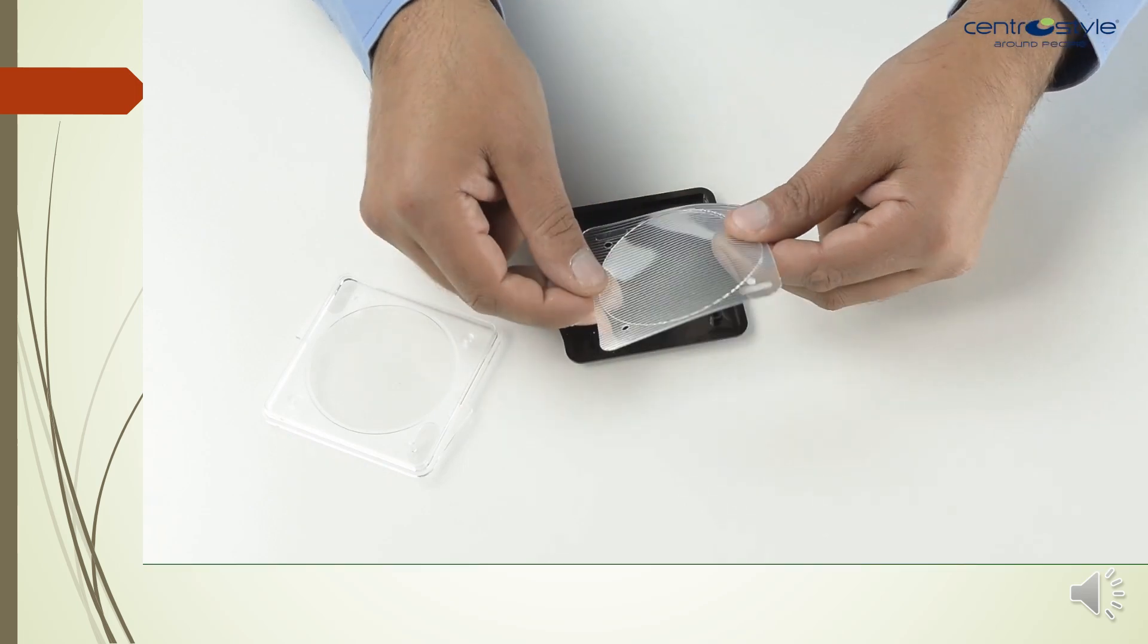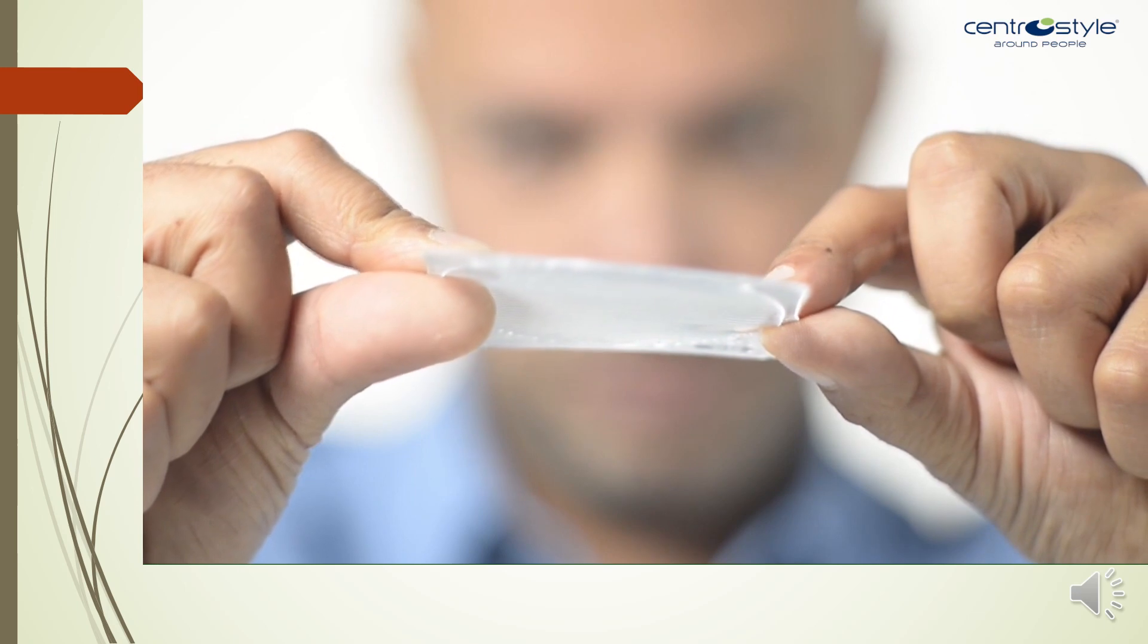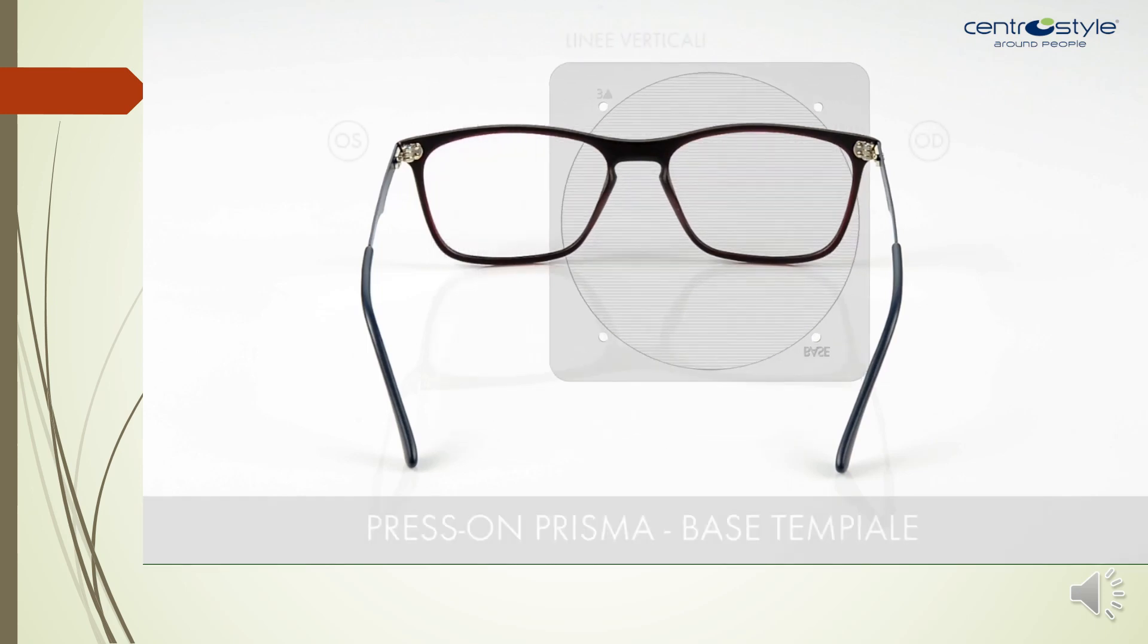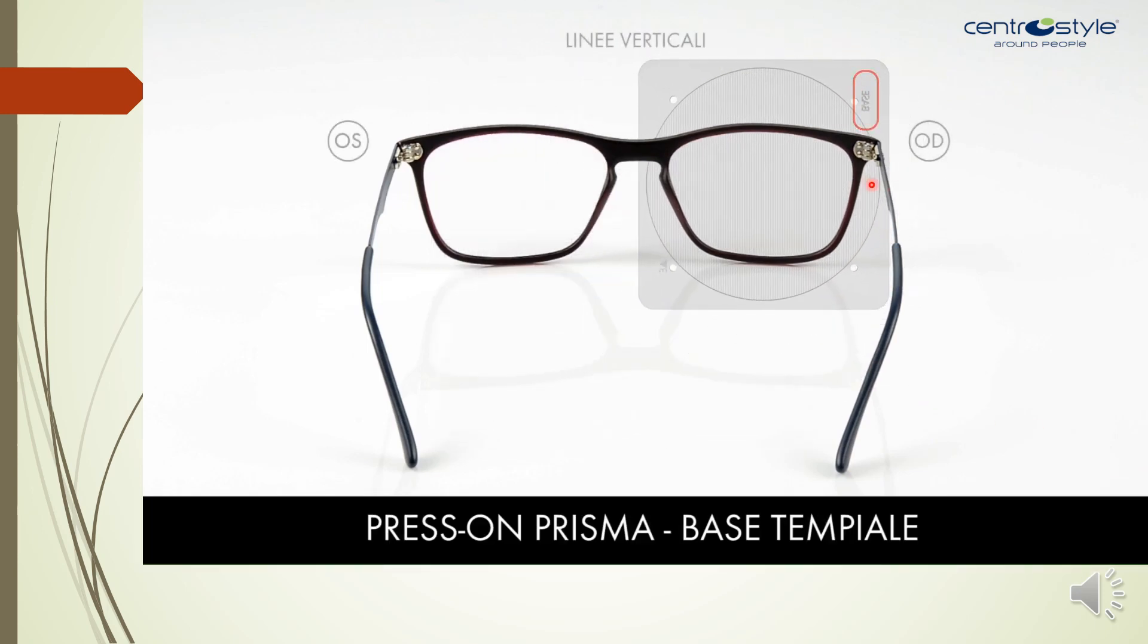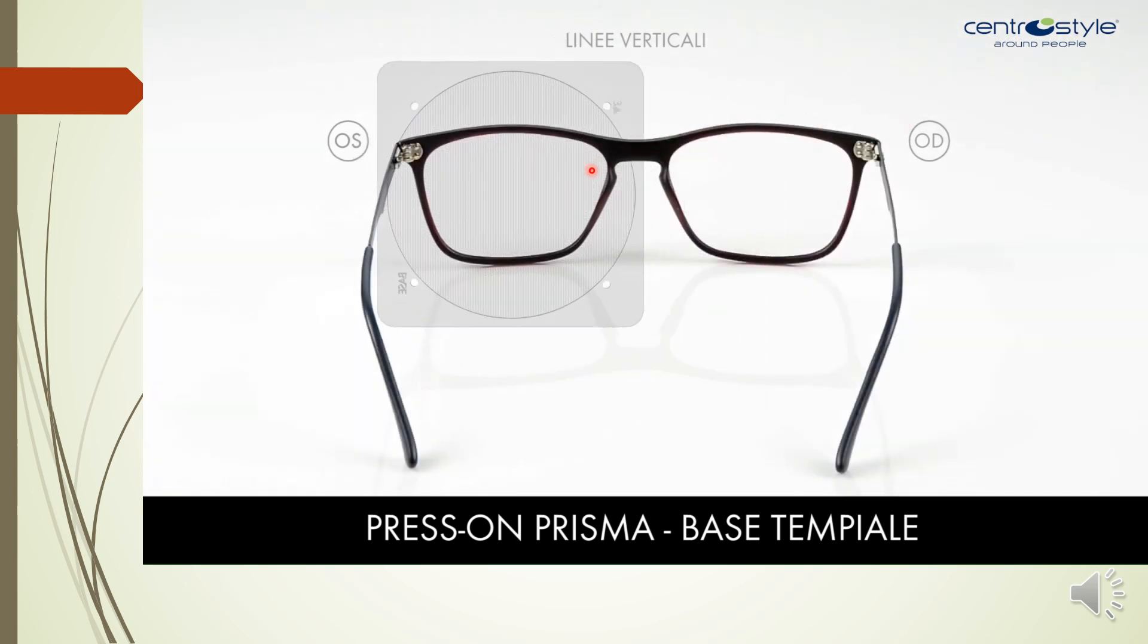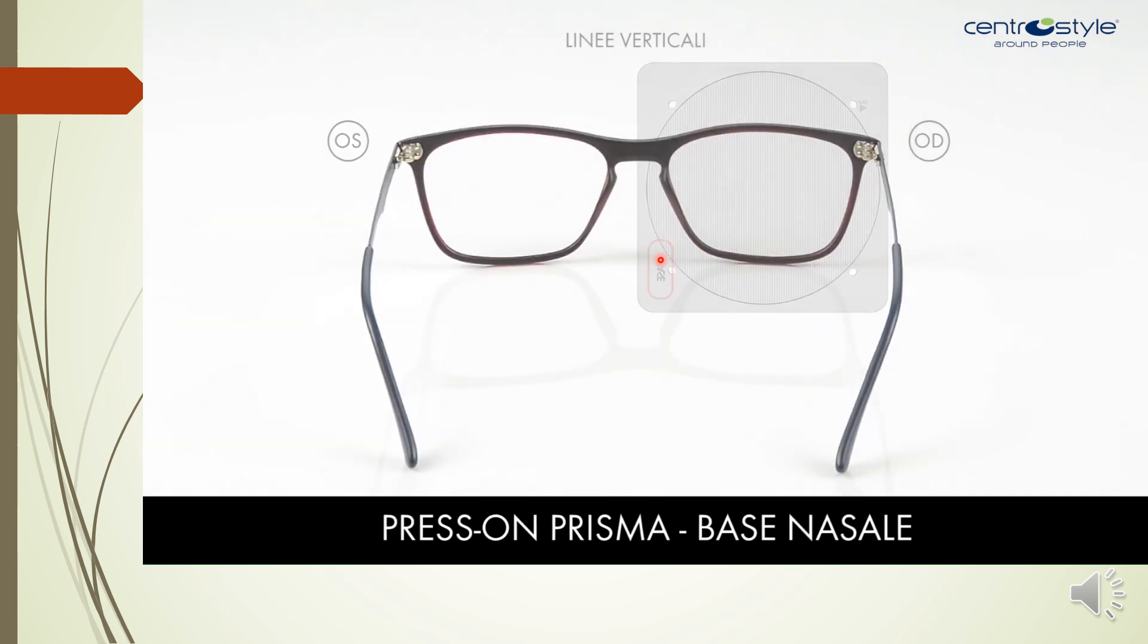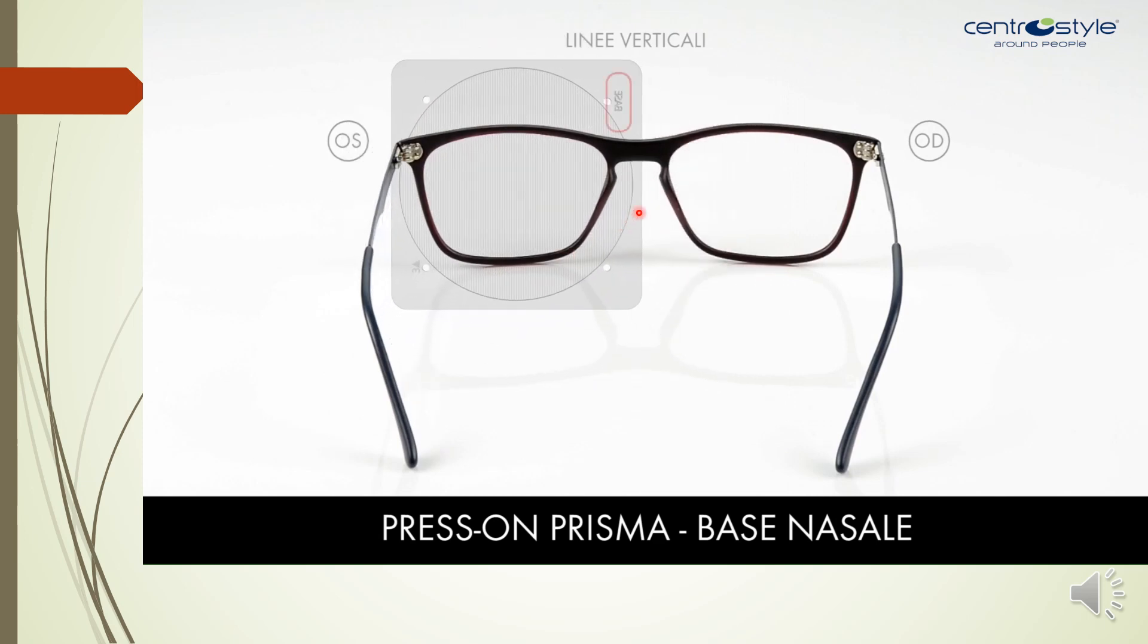This is how a Fresnel prism actually looks like. It is quite flexible. If you see how thin it is, it is hardly 1 to 2 millimeters, maximum 1 millimeter. If you see here, it is written as 'base.' This is giving you the idea of where the base is. When I keep it this way, this is base out. Again this is base out. When I keep it this way, it is base in. Again the same, base in.